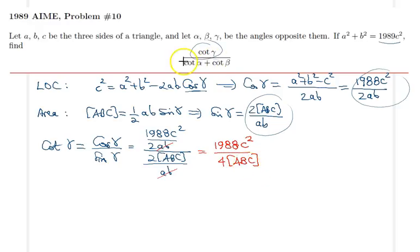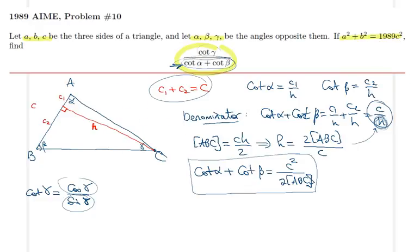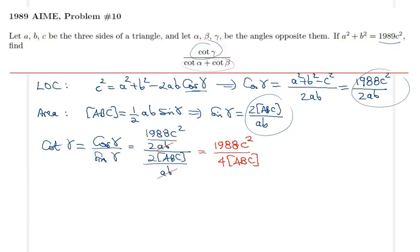Recall that in the previous page I already have a nice expression for cotangent alpha plus cotangent beta, which was c²/(2·Area[ABC]). Let me move that to the right hand side.